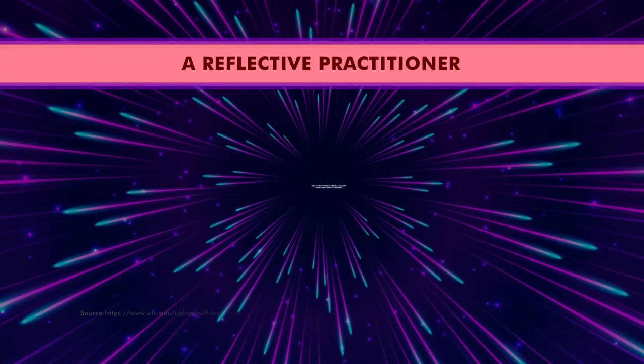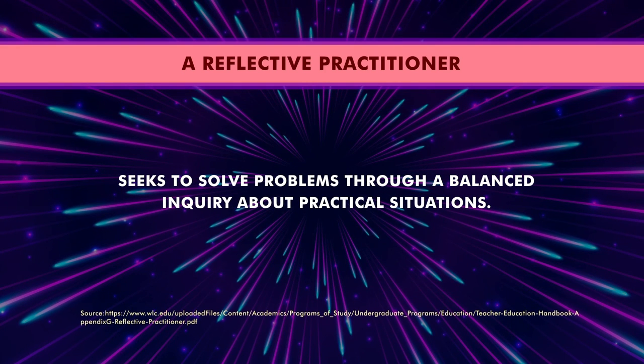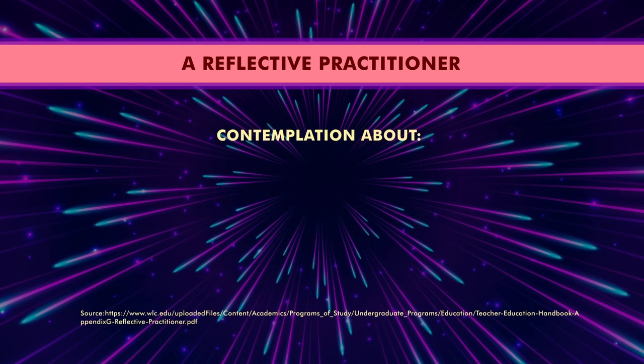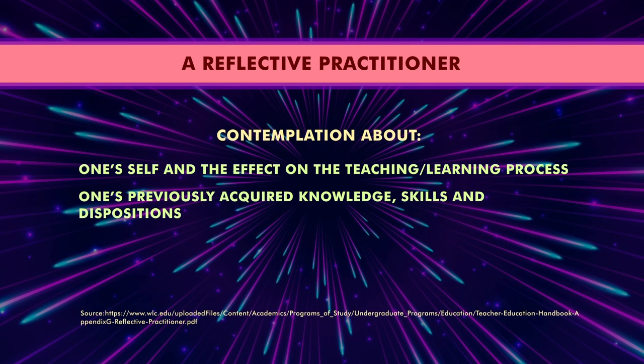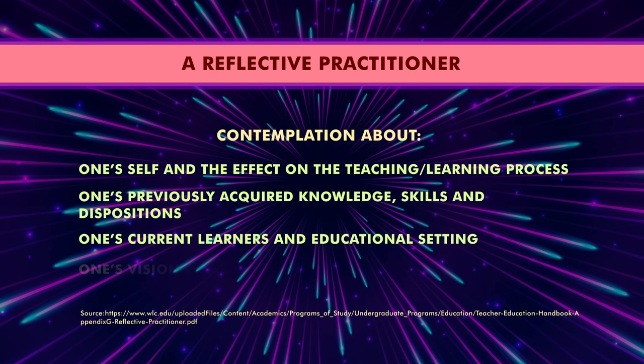Whether it is the Atkins model, Van Manen's model, Schön's model, or other models, all are trying to analyze and explain how reflection takes place. A teacher should be a good reflective practitioner. A good reflective practitioner is one who seeks to solve problems through a balanced inquiry about a practical situation, who always contemplates about oneself and the effect on the teaching and learning process, uses previously acquired knowledge, skills, and dispositions, considers current learners and educational settings, and maintains a vision for accountability and development. My suggestion is: always reflect — reflect for the action, in the action, and on the action. Be a good reflective practitioner. Thank you very much.